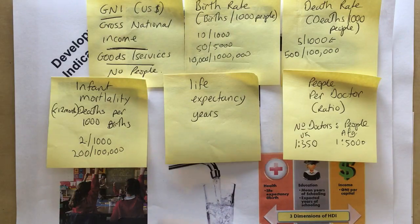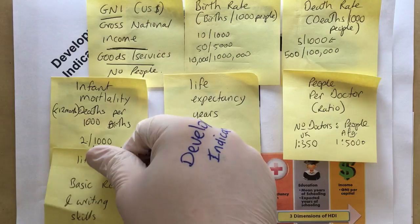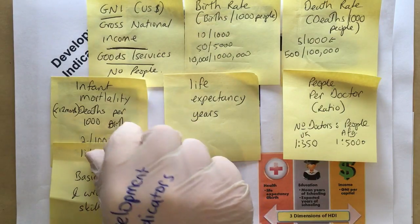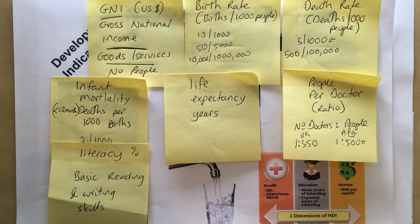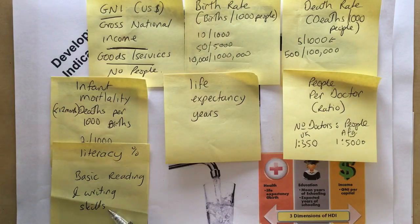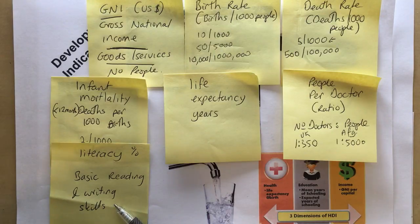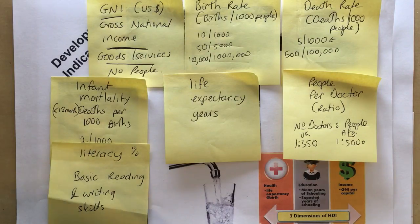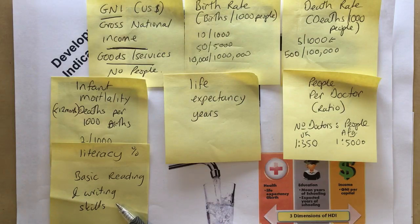Next is the literacy rate, which tells you the percentage of adults that have basic reading and writing skills. In the UK the literacy rate is about 99%. In Nigeria it's about 60–90%. It's a useful indicator showing how much the government spends on education, or how accessible education is in that particular country.